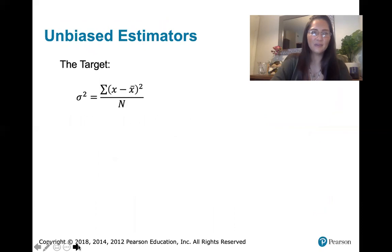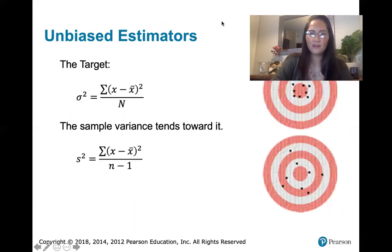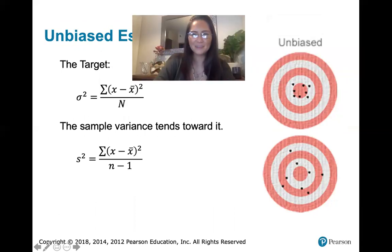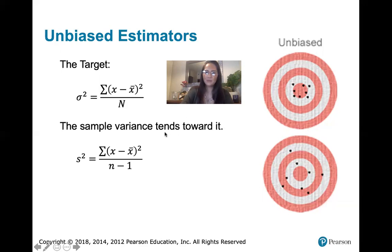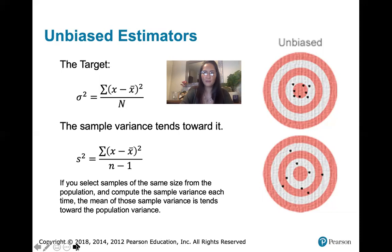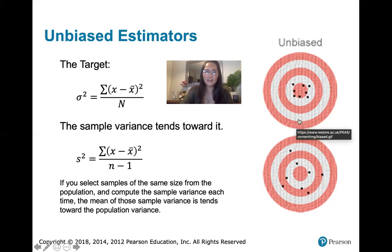Unbiased estimators actually give you that targeted value. The sample variance is an unbiased estimator — it tends toward the population variance. Look at these pictures on the right: that population variance is our target. If you take a number of samples from the population, all of the same size, calculate the sample variance for each, and then find the mean of all those sample variances, the mean of those sample variances is actually the population variance. That makes the sample variance an unbiased estimator.